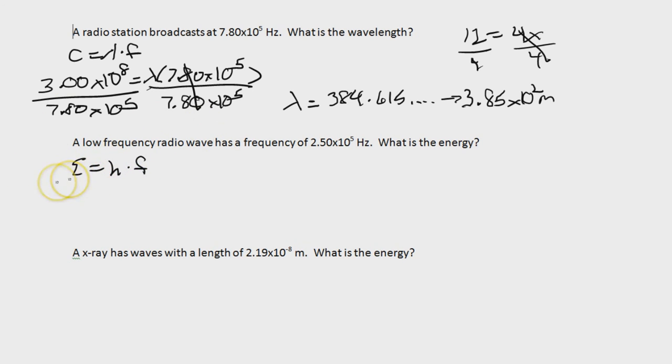So do we know E? No, we do not. That's what we are looking for. But do we know H? Yes, we do. It is a constant. It is 6.63 times 10 to the negative 34th power. And then F is right there in the question. It is 2.50 times 10 to the 5th power. And then we pick up our calculator. We multiply those two numbers together, and we get 1.66 times 10 to the negative 28th. And since this is energy, our units are joules. Very simple.